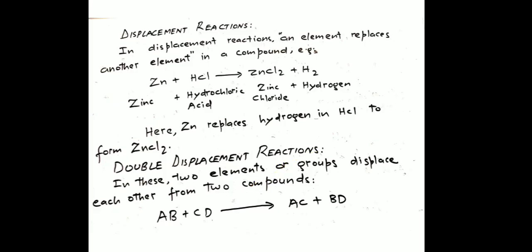This next reaction is a displacement reaction, in which one atom is replaced by another atom — also called a substitution reaction. One element replaces another element in a compound. For example, zinc reacts with hydrochloric acid (HCl) to form zinc chloride and hydrogen. Here, zinc has displaced hydrogen from HCl, producing zinc chloride. This is called a displacement reaction.